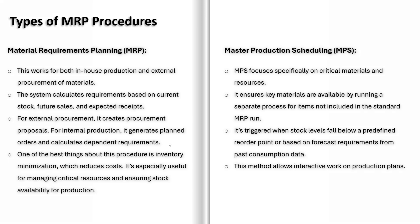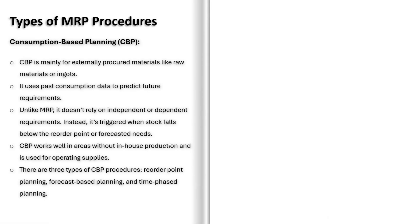Finally, we have Consumption-Based Planning, CBP. Unlike MRP and MPS, CBP doesn't rely on future demand forecasts. Instead, it uses historical consumption data to determine when to reorder materials. CBP is commonly used for raw materials, spare parts, and operating supplies. When stock levels drop below a predefined reorder point, the system automatically triggers a replenishment order. This method is ideal for items with predictable consumption patterns.